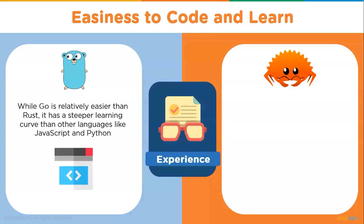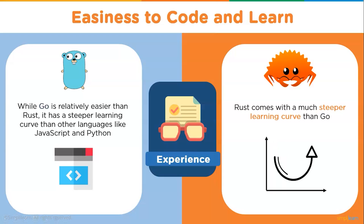Rust comes with a much deeper learning curve than Go. While Go is relatively easier than Rust, it has a steeper learning curve than languages like JavaScript and Python. Go was designed with a relatively simpler syntax and was adopted as an easier alternative to C++. On the other hand, people find Rust harder due to its syntax, and passing pointers makes the code more complex.